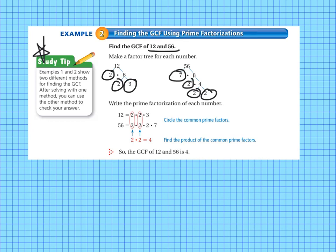And we write the prime factorization of each number. So we write it out as a multiplication problem. So 12 equals 2 times 2 times 3, and 56 equals 2 times 2 times 2 times 7. And then we circle the common prime factors. So we have a 2 in both the list of prime factors for 12 and 56, so we circle that. And the 3 does not match up with anything in the list of prime factors for 56, and the last 2 and the last 7 in the list of prime factors for 56 don't match up with anything in 12.